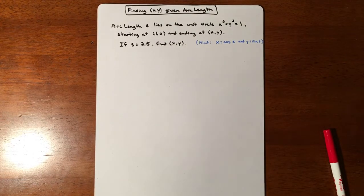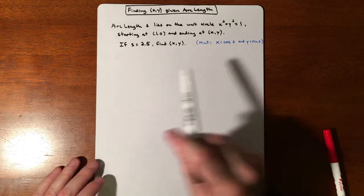In this lesson, we are going to try to figure out what a coordinate is based on an arc length. And it kind of sounds weird, but it ends up being very straightforward, actually.